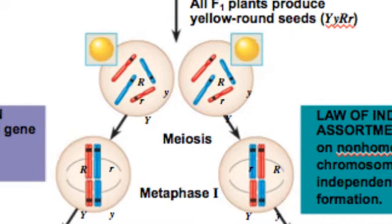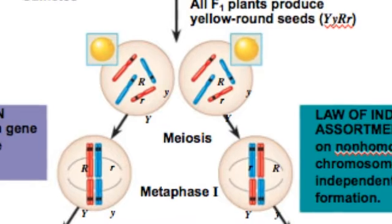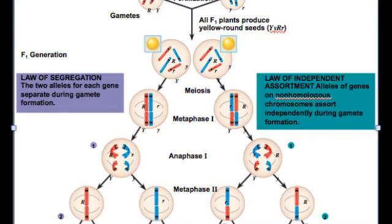The germ cells from this generation go through their normal cell cycle, copy their chromosomes making sister chromatids and in metaphase one of meiosis one is where we can demonstrate both the law of segregation and independent assortment of Mendel's heredity factors or genes on chromosomes.